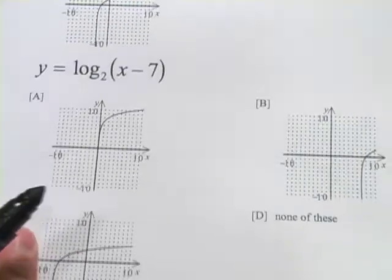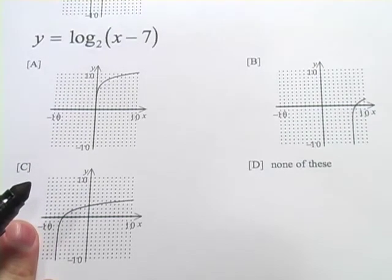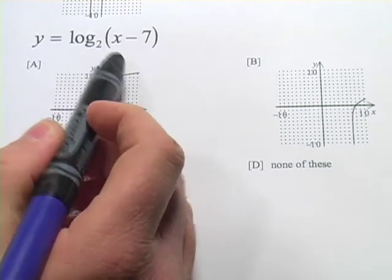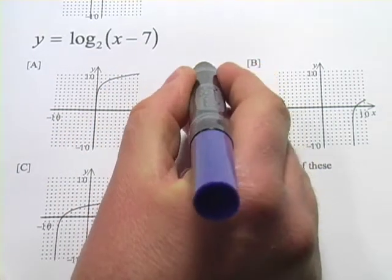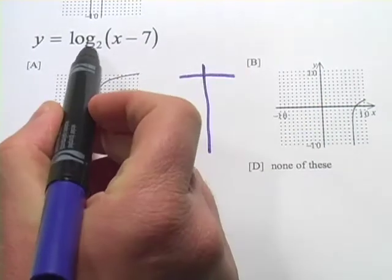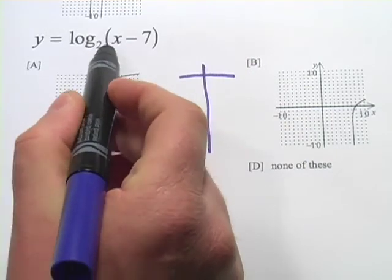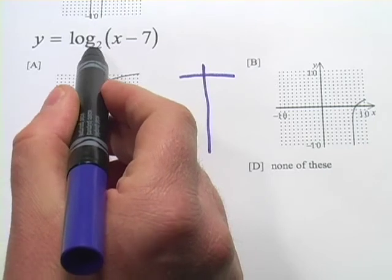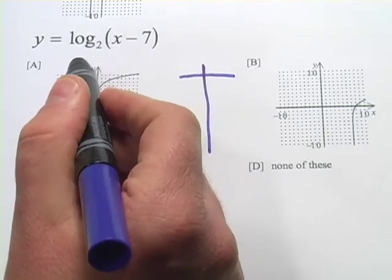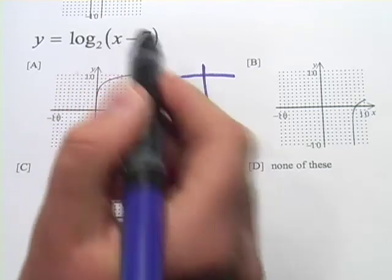Let's try one more. This one says y equals the log of 2 of x minus 7 in parentheses. So again, we'll make a chart. This is the log base 2, so let's see if we can get what's inside the parentheses to equal 2. And then that would be to what power do you raise 2 to equal 2 will be the first power.